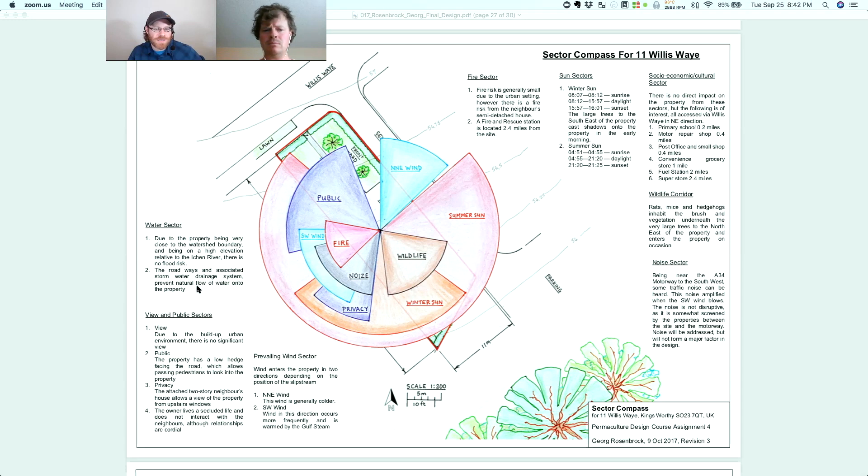Roadways and associated storm water drainage system prevent natural flow of water onto the property. Again, told us what's going on. As you go through this, you're going to see that there's a public sector as people walk by. Again, everybody has some kind of social sector. You have some kind of interaction. You've got a neighborhood kid who walks over the back fence every time he throws a ball. That's a public sector. That's a neighbor sector. Showing us some of the prevailing winds and showing us where they are and showing us when they come. So that's an important thing as well. Summer winds come in usually a different direction than winter winds.